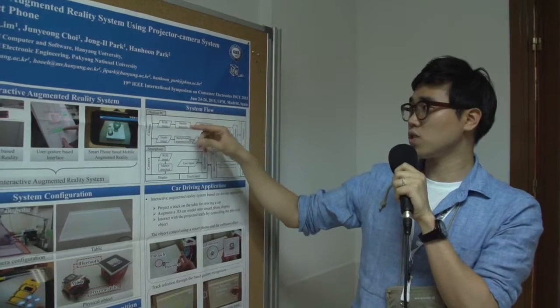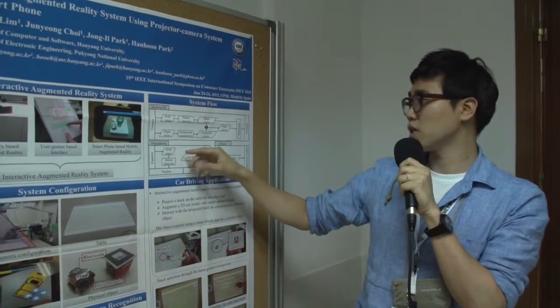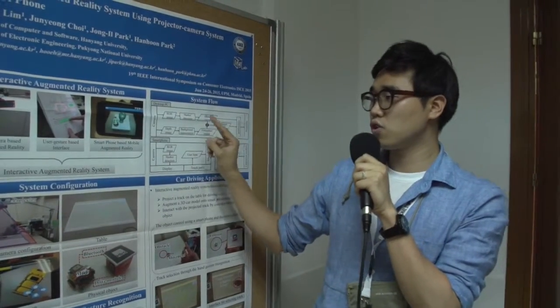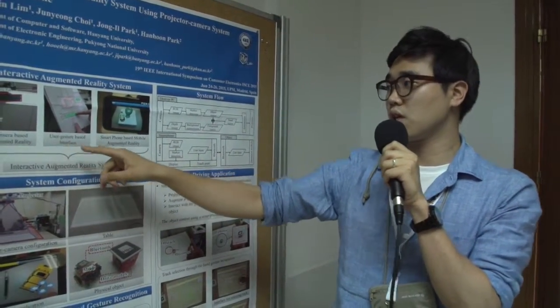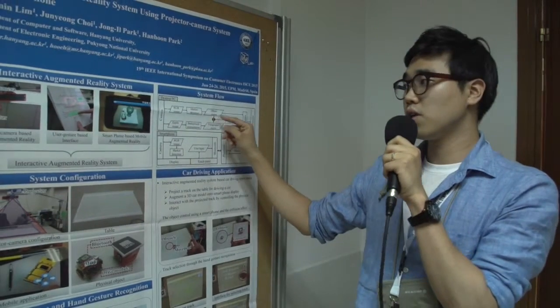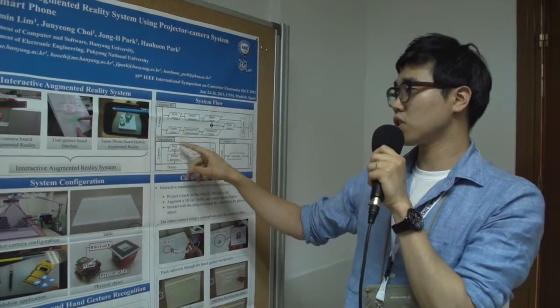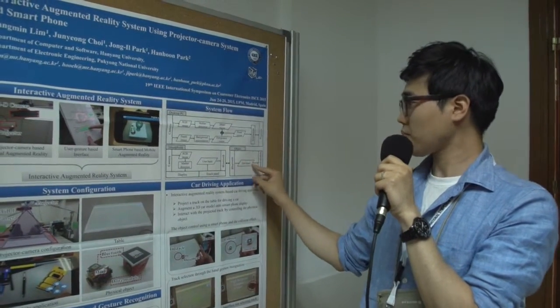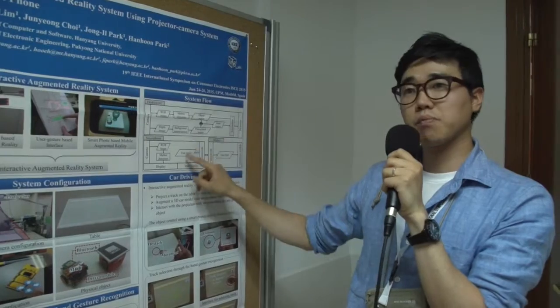Looking at the system flow, there's the desktop, smartphone, and object. The desktop processes two technologies: Spatial Augmented Reality System and Hand Gesture Interface. The smartphone processes mobile augmented reality. The object interacts with the smartphone.